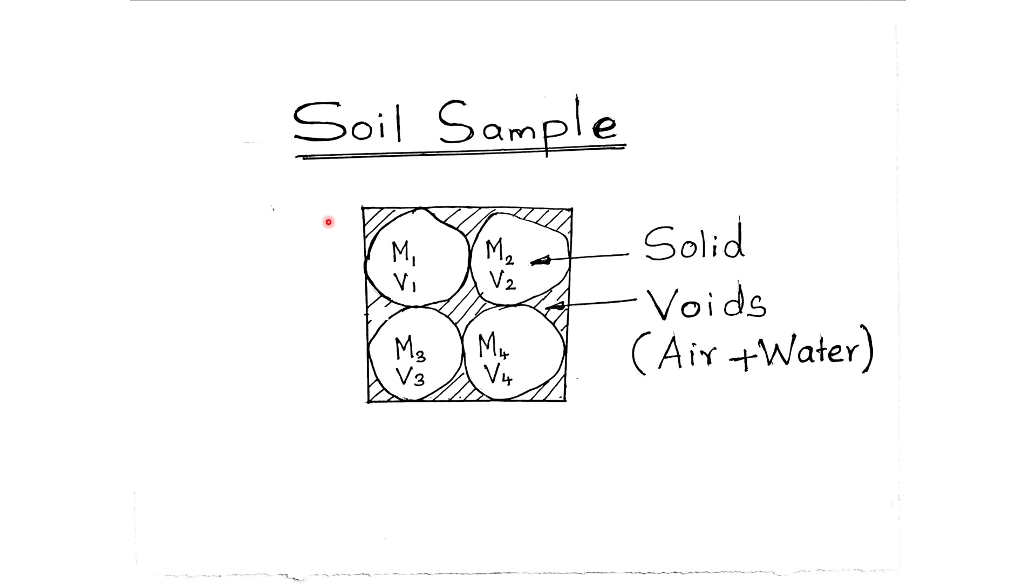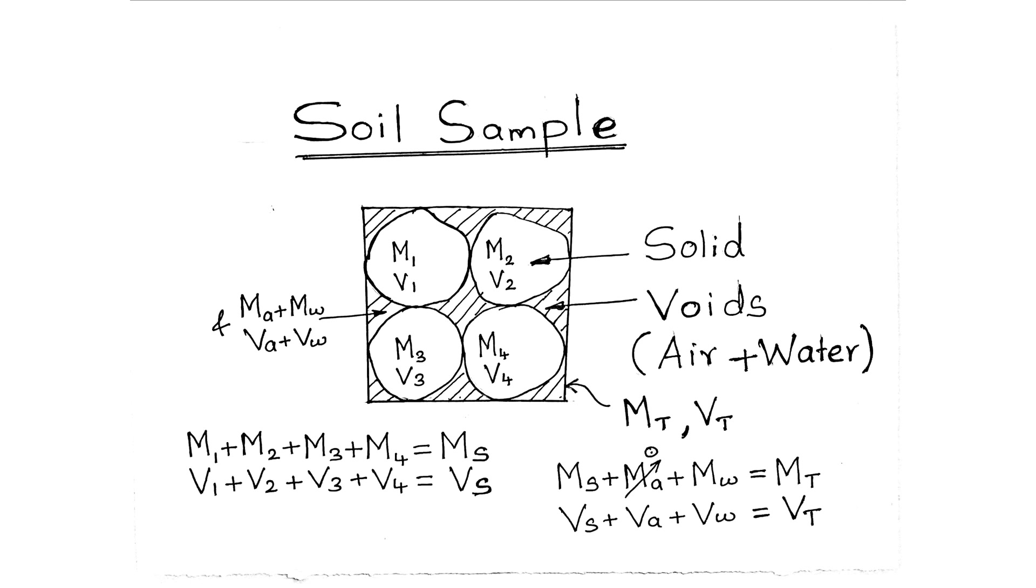M1 is this particle's mass, V1 is this particle's volume. Void mass is Ma plus Mw, i.e., mass of air plus mass of water. Void volume is Va plus Vw, i.e., volume of air plus volume of water. Mt is total mass, Vt is total volume.